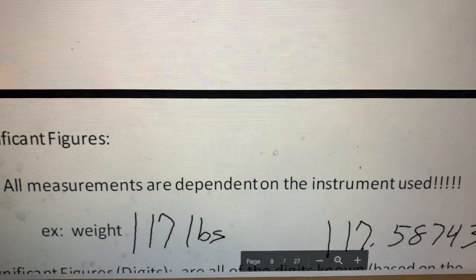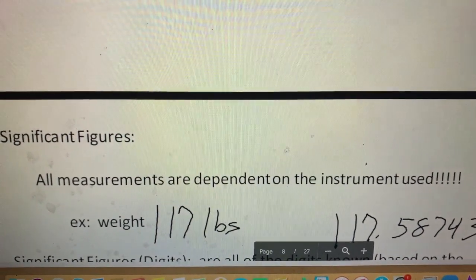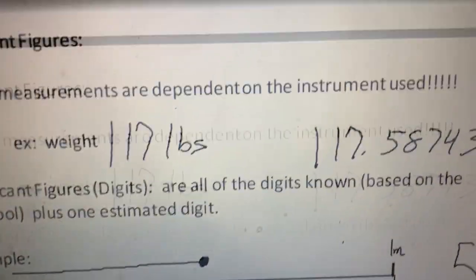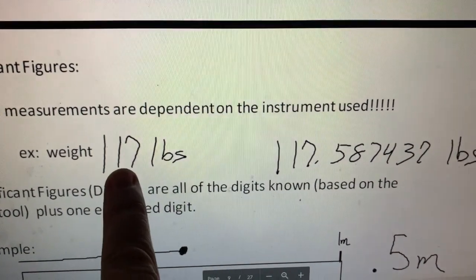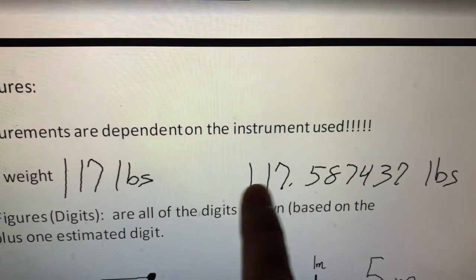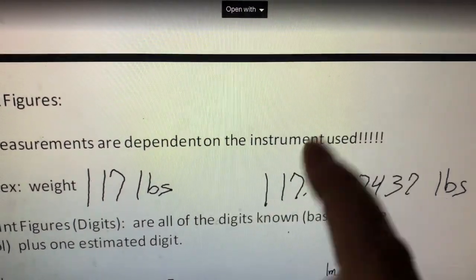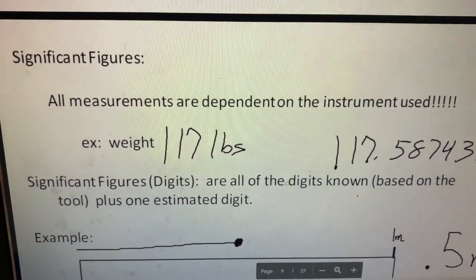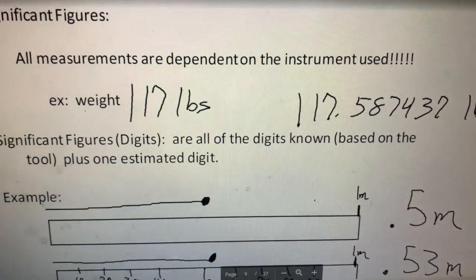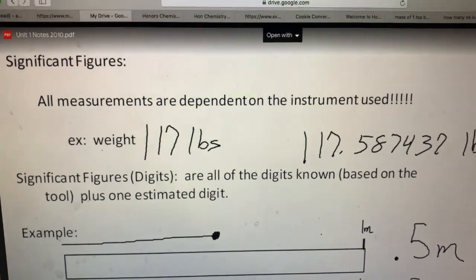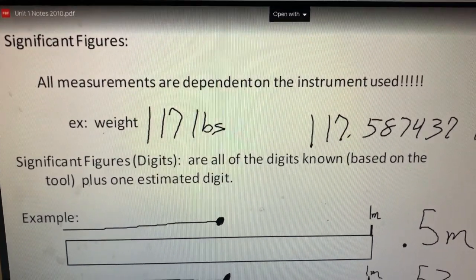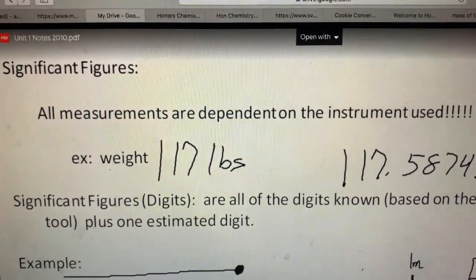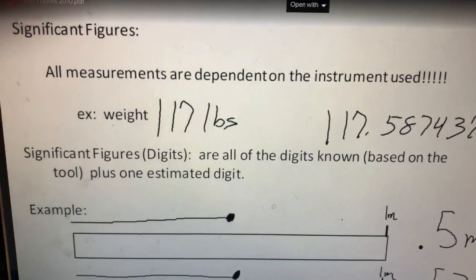All measurements are dependent on the instrument used for that measurement. So let's go through some examples and look at the actual definition of a significant figure. Significant figures or digits are all of the digits known based on the tool, meaning you actually see it on the instrument, plus one estimated digit.